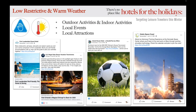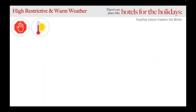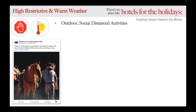What if you're in a market with the same warm or mild weather but have heightened restrictions in your local area? These types of properties can possibly be found in the Southwest or West Coast, like California. While the restrictions might be high, they still have the unique advantage of good weather. Because of that, hotels should be posting about outdoor activities in the local area — only this time keeping those restrictions in mind — so find outdoor, socially-distanced activities to attract winter travelers.